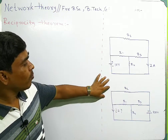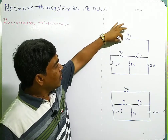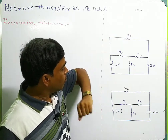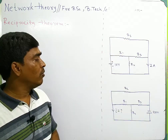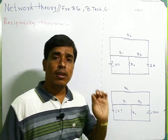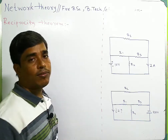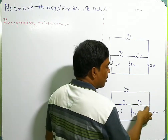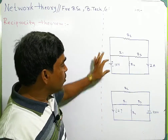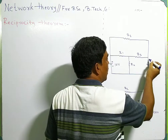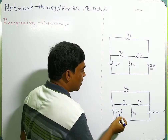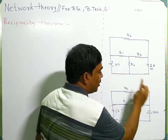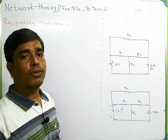We will discuss this problem. These two networks contain the same resistances: r1, r1, r2, r2, r3, r3, r4, and r4 — all resistances are the same in both networks. In this network there is a voltage source, and for this voltage source of 10 volts, you have gotten 2 ampere current at this position. Now you have to calculate the current at this position of the second network when the voltage source is moved from one position to the other.